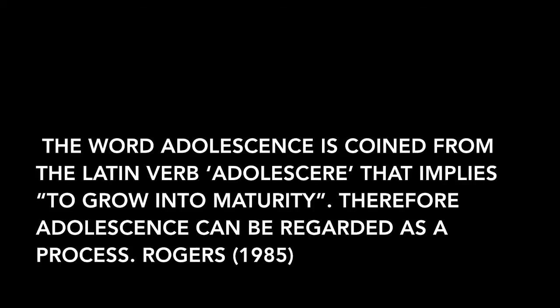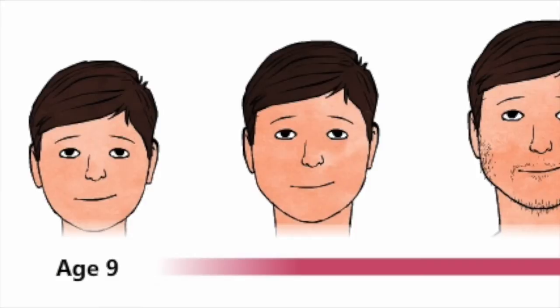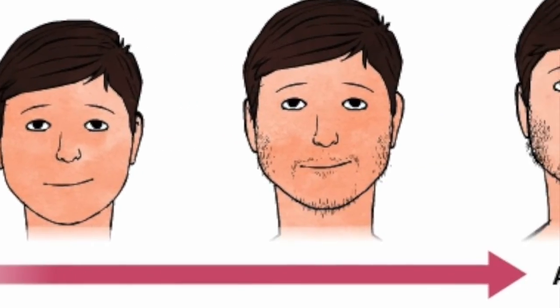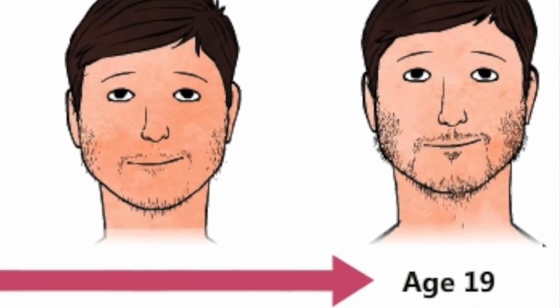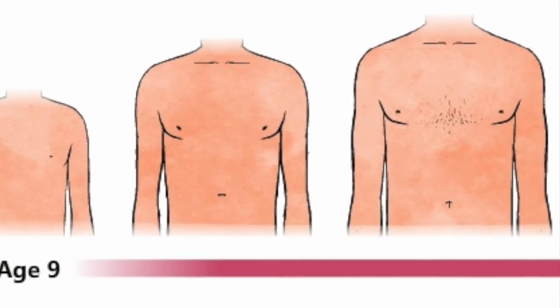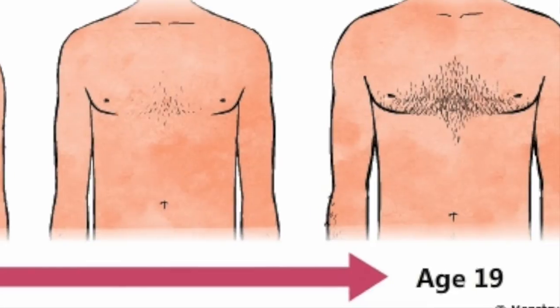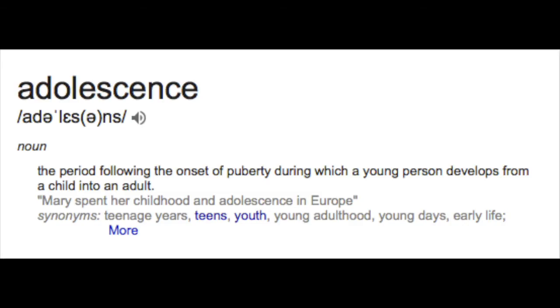In the following few slides we will look to define adolescence. The word adolescence is coined from the Latin verb adolescere, which implies to grow into maturity. Therefore, adolescence can be regarded as a process, or it can be described as the period within the lifespan when most of a person's biological, cognitive, psychological, and social characteristics are changing from what is typically considered childlike to what is considered adultlike.